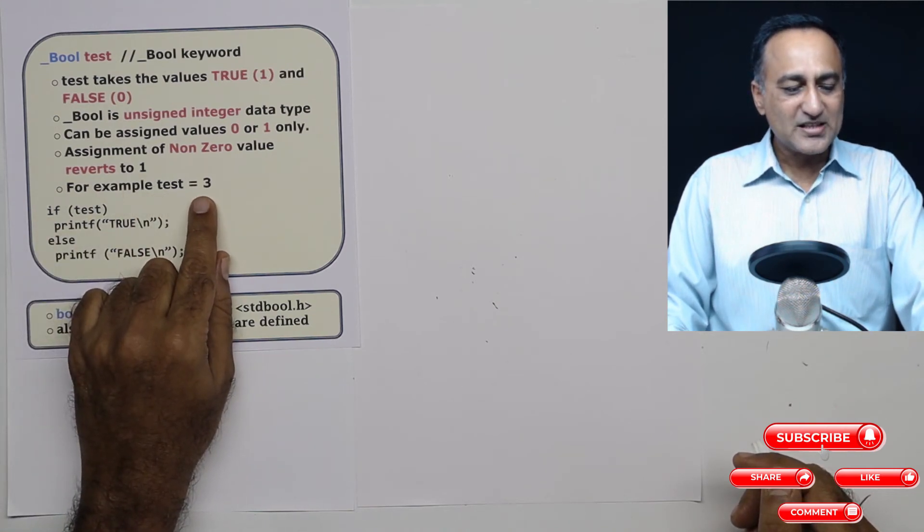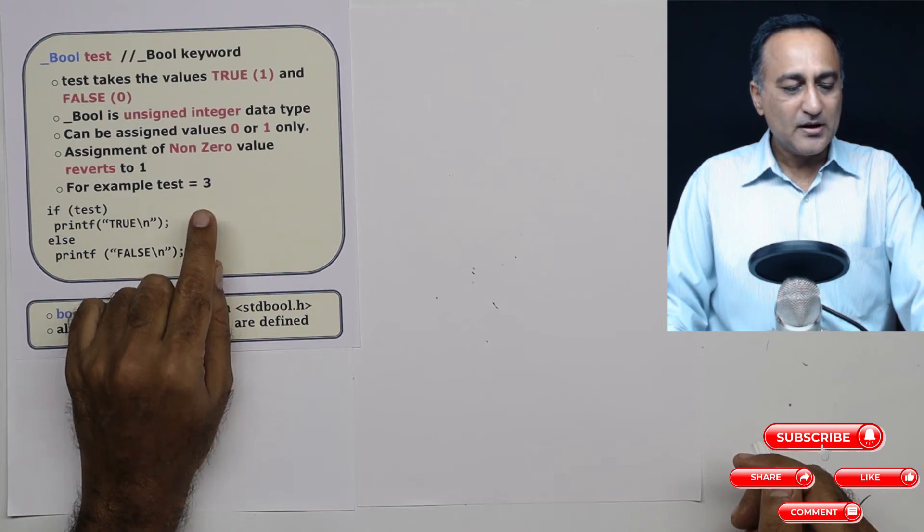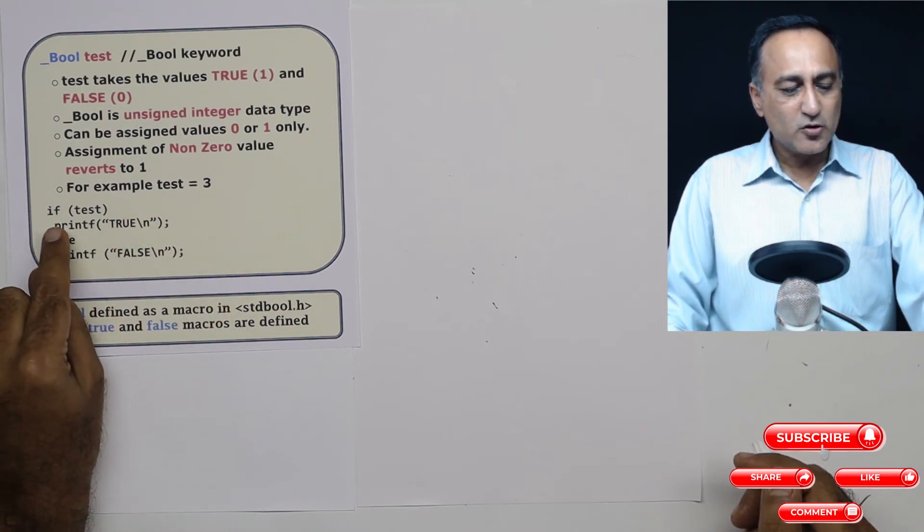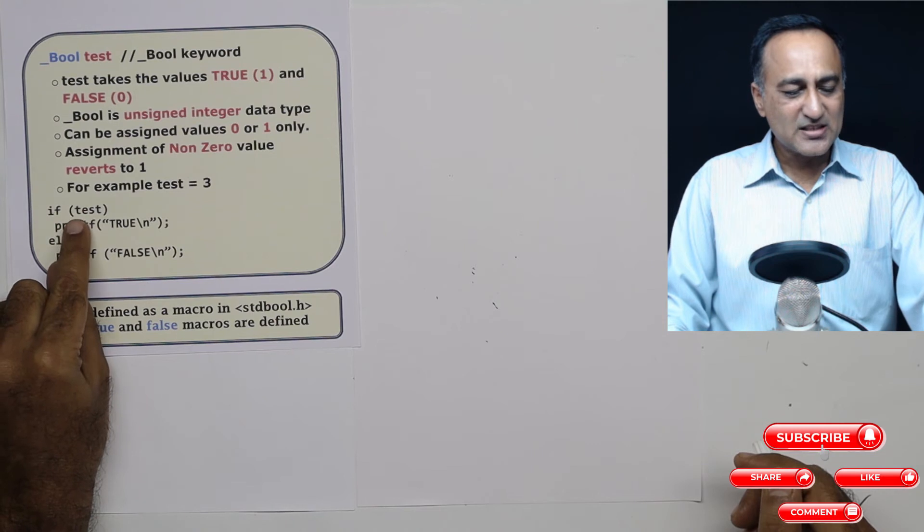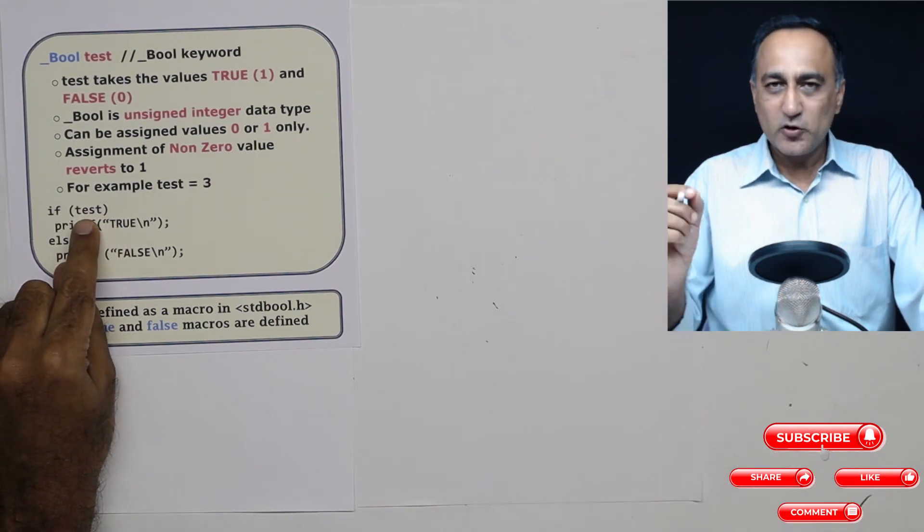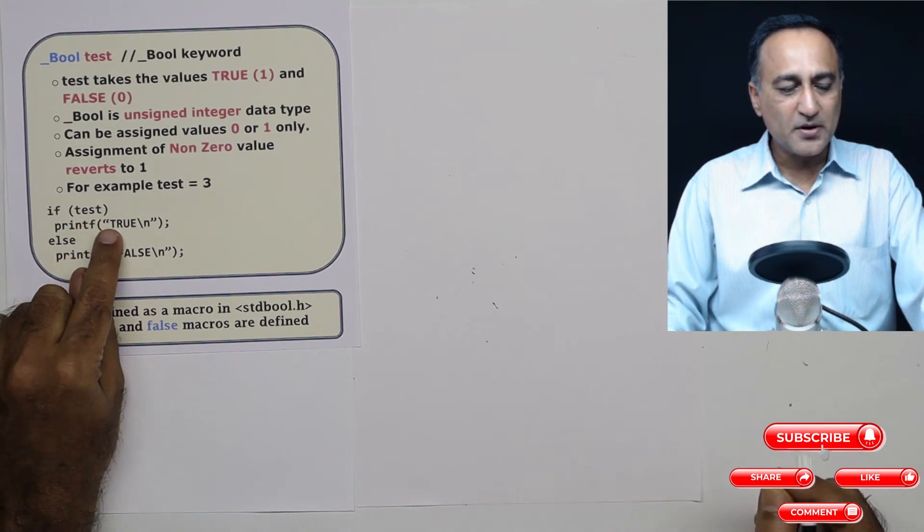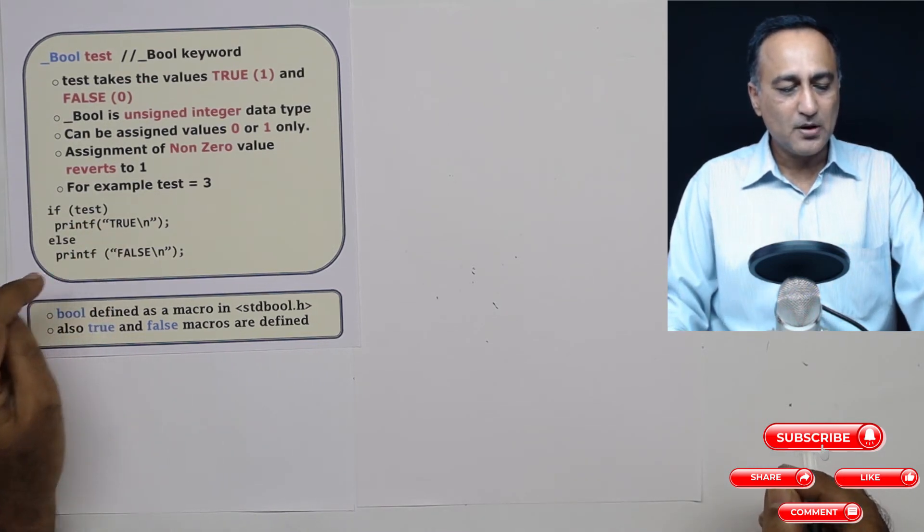Now, if I try to print test, it's going to print one. But if I try to test it, it's going to do something like this. If I say if test printf true, so any non-zero value is said to be true. So since test is not zero, it is going to print the value true and it is going to come out.